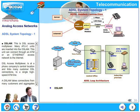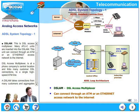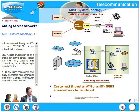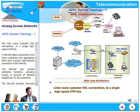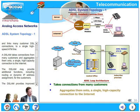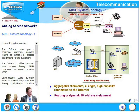The third component is DSLAM, the DSL Access Multiplexer. Many ATUC units are inserted into the DSLAM, which can connect through an ATM or Ethernet access network to the Internet. DSLAM is at a phone company's central location and links many customer DSL connections to a single high-speed ATM line. A DSLAM can also aggregate connections from many customers onto a single high-capacity connection to the Internet, and may provide additional functions including routing or dynamic IP address assignment for customers.